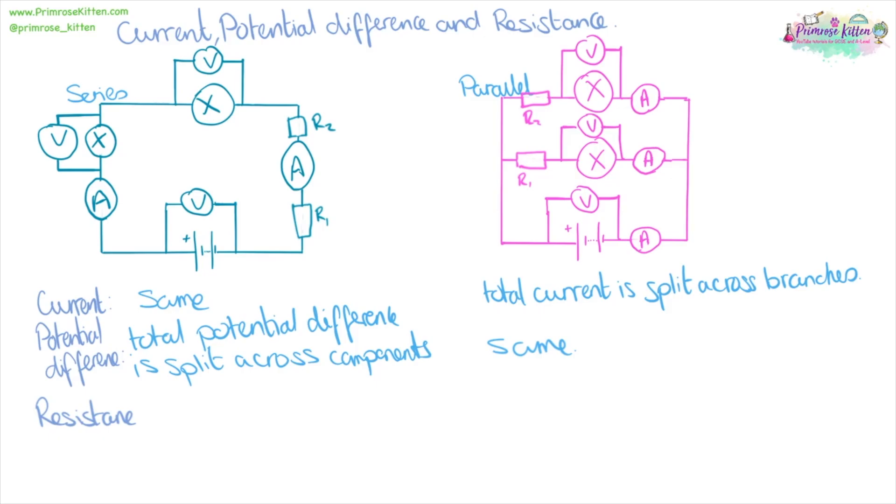Our circuits are getting quite complicated now, and we're going to be looking at resistance. When we have resistors that are in series, the total resistance is just them added together. Whereas when we have resistors that are in parallel, the total resistance is one over resistance one, plus one over resistance two, and so on.